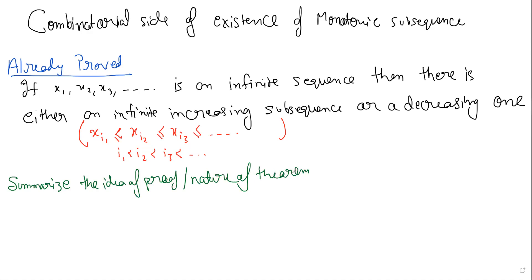This is a part of the Bolzano–Weierstrass theorem. But what is the idea? This is a completely non-analysis question. The idea is about peaks — you keep finding increasing subsequences as long as you can, and when you cannot, you stop. That means there's nothing bigger than this current term to the right. Then you start again. If you can go on forever, you found an increasing subsequence. If you cannot, you stop, and those peaks will be going down.